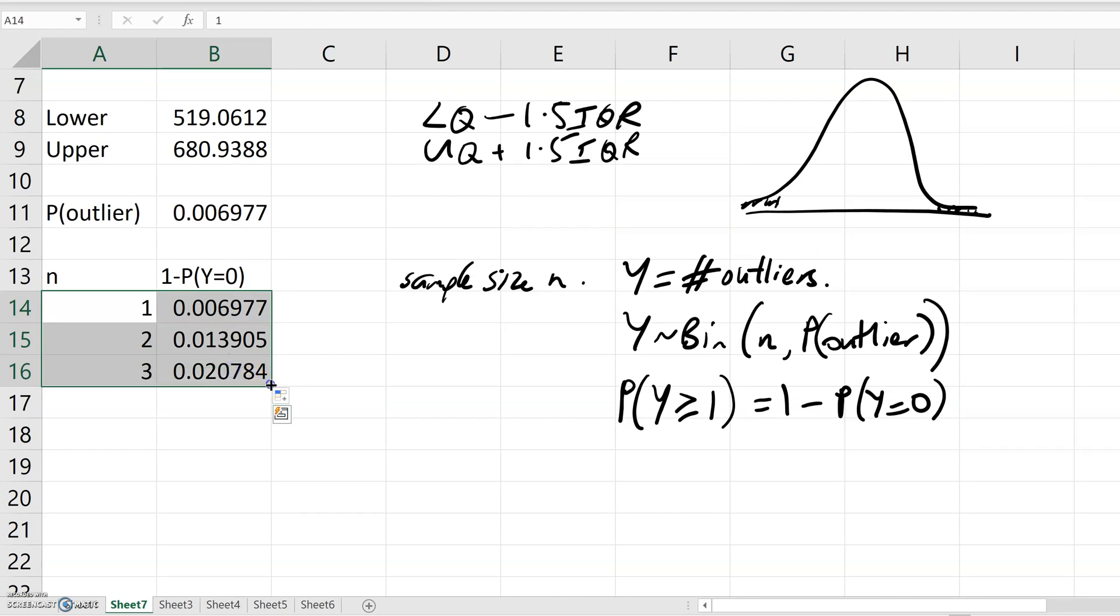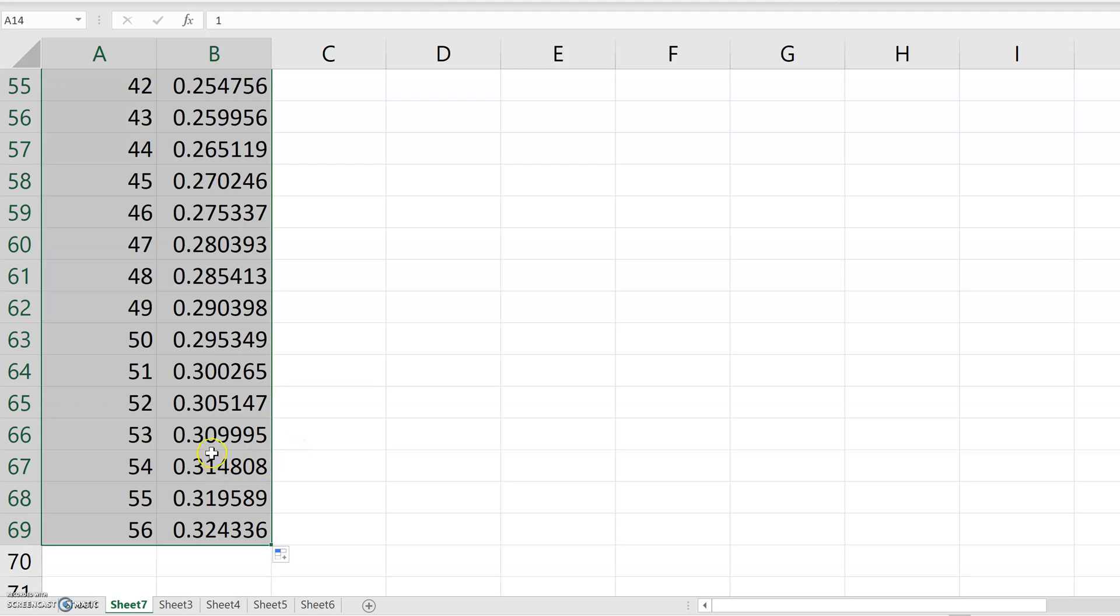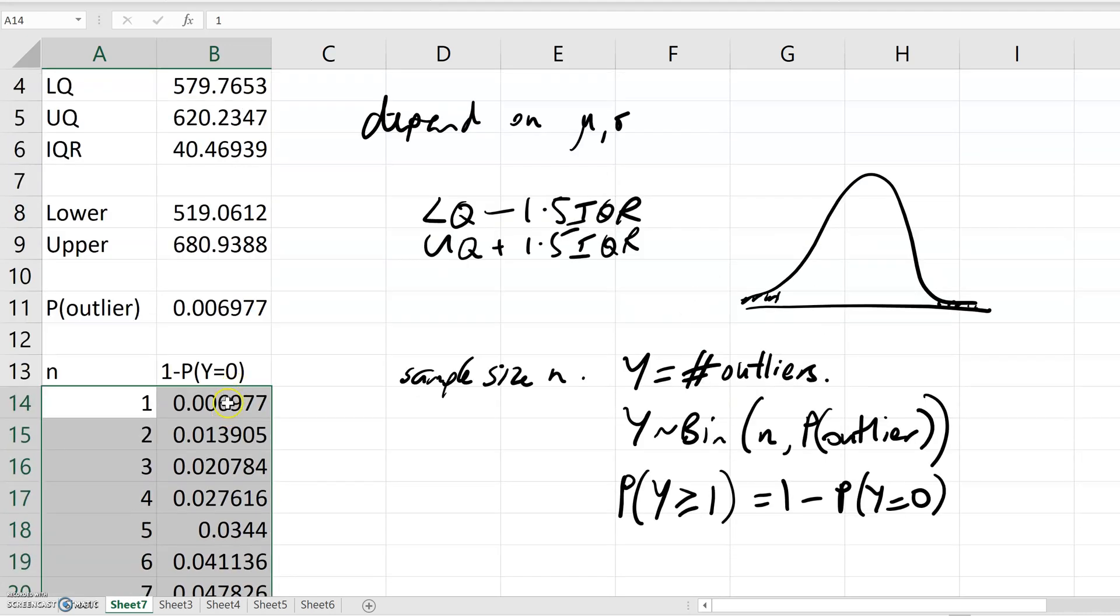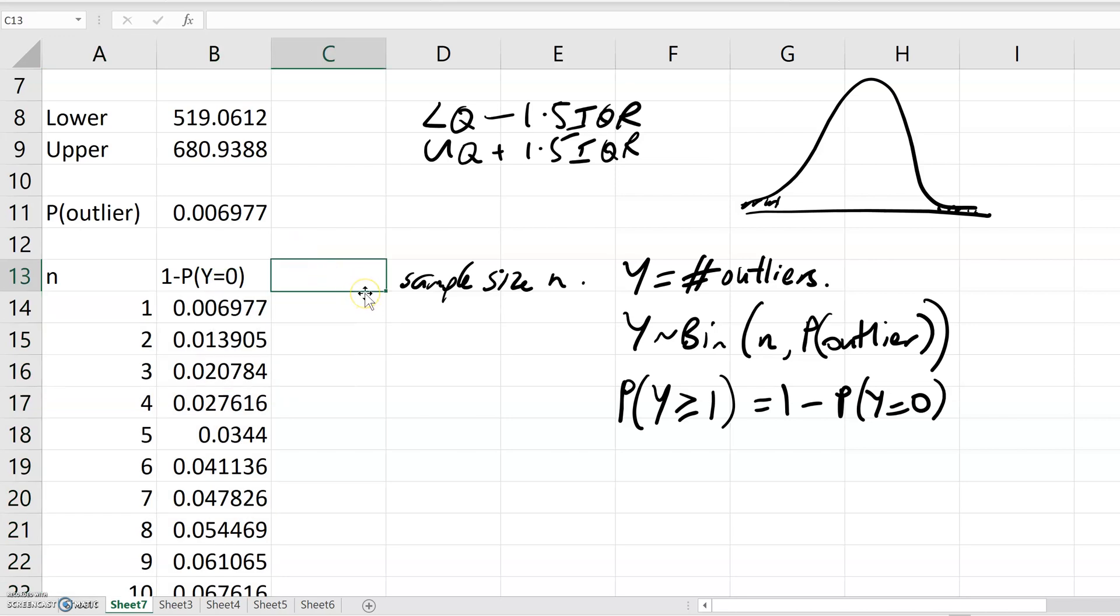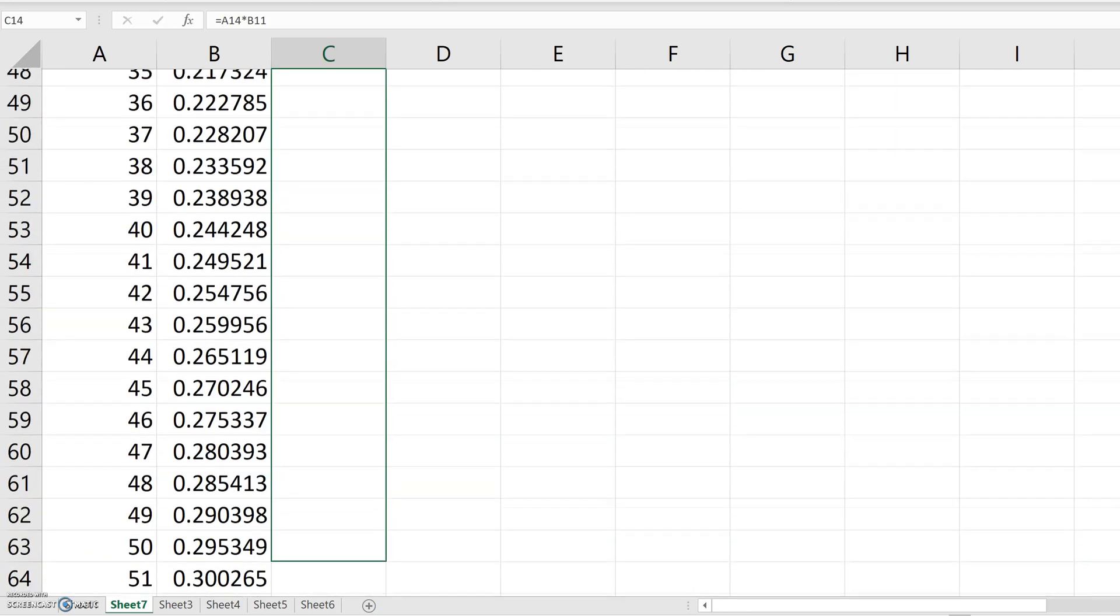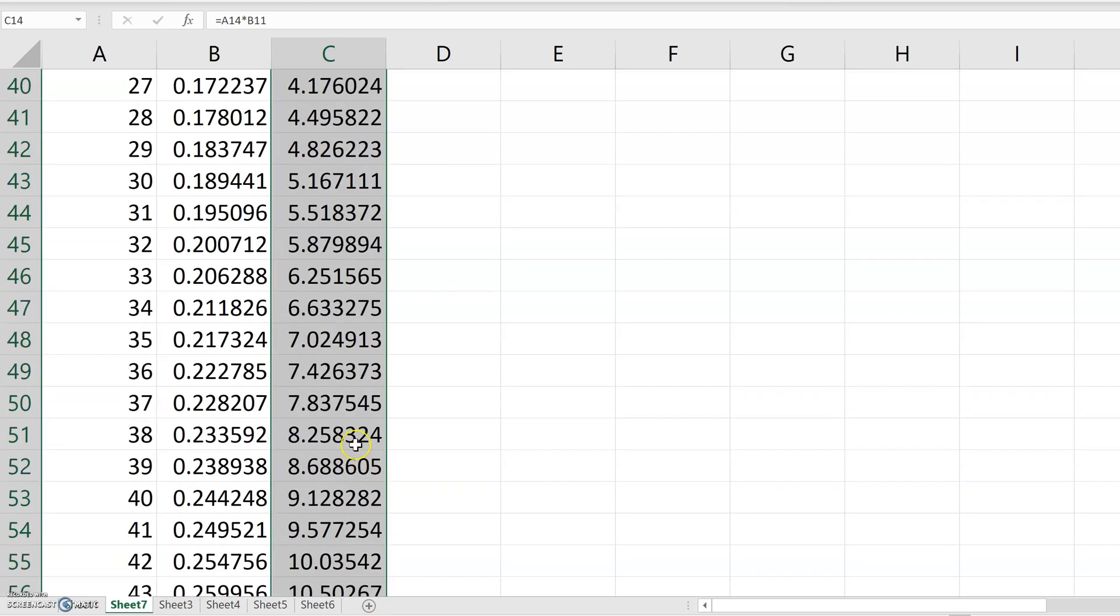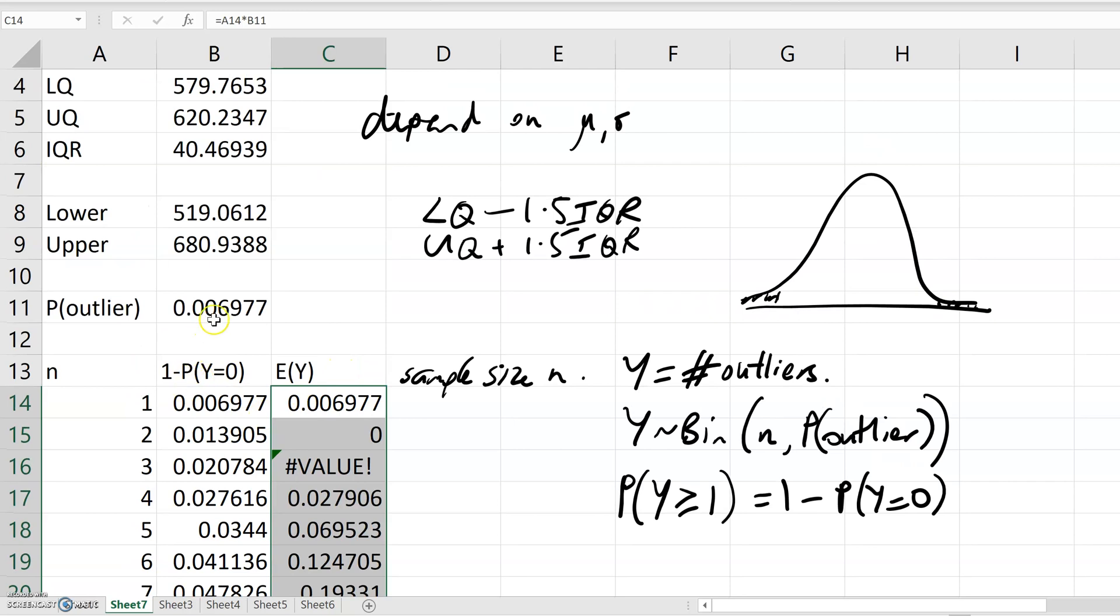We can see that as the sample size increases, this probability goes up. We can also calculate as a function of n the expected value of Y, the expected number of outliers. This is going to be n times p, the probability of each observation being an outlier. We can copy that down as well. That grows linearly with n, whereas the other function...